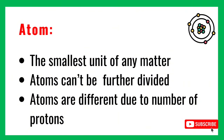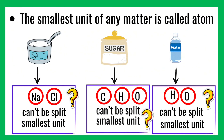Atoms are different due to the number of protons. Let's understand all these statements one by one with examples. Salt, sugar, and water are matter. When we look at salt under an electron microscope, we observe that salt is made up of two atoms: sodium and chlorine. Sodium and chlorine can't be split further into simpler substances, so sodium and chlorine are the smallest unit — the basic unit — of salt.